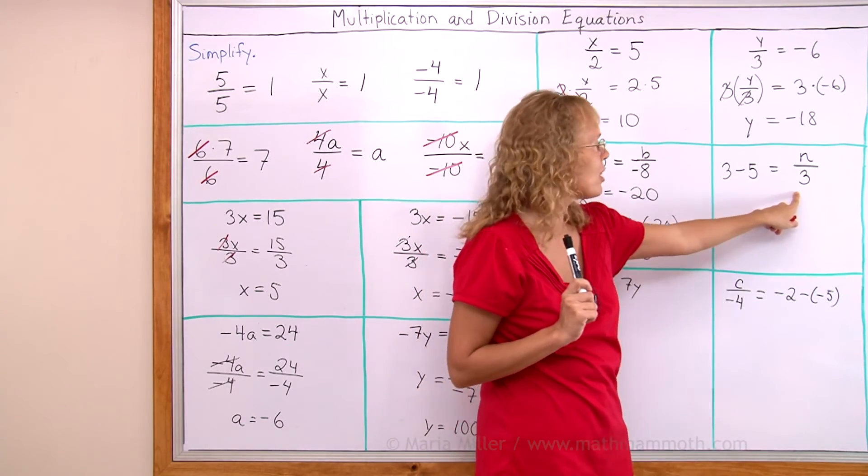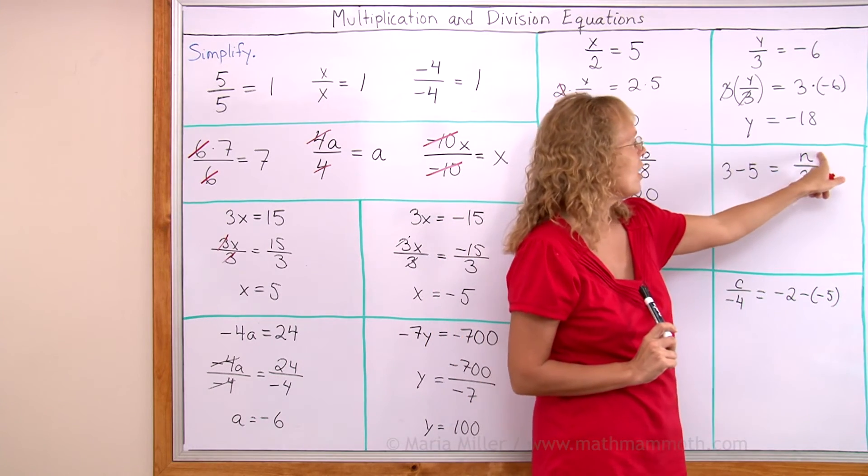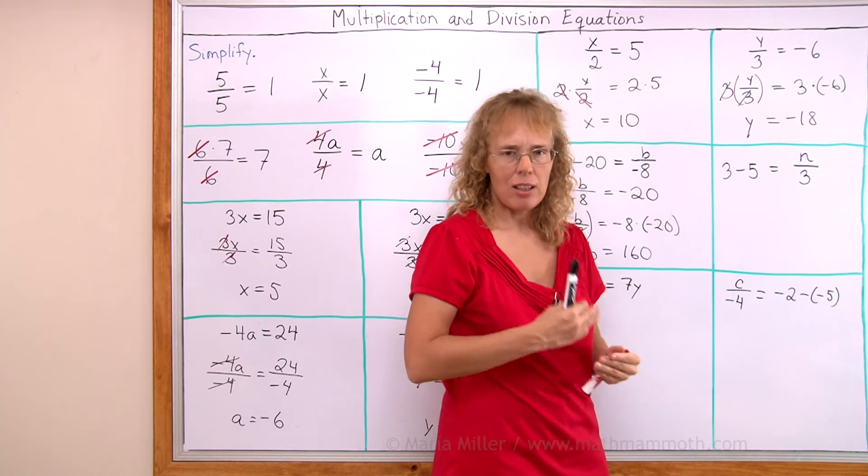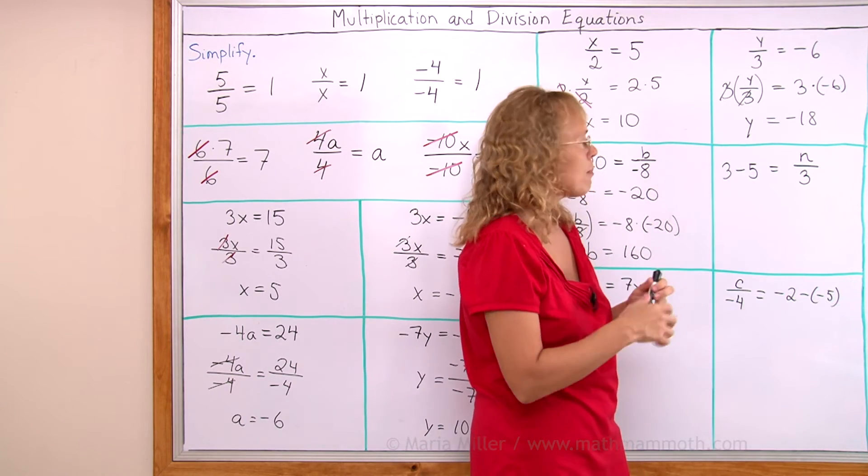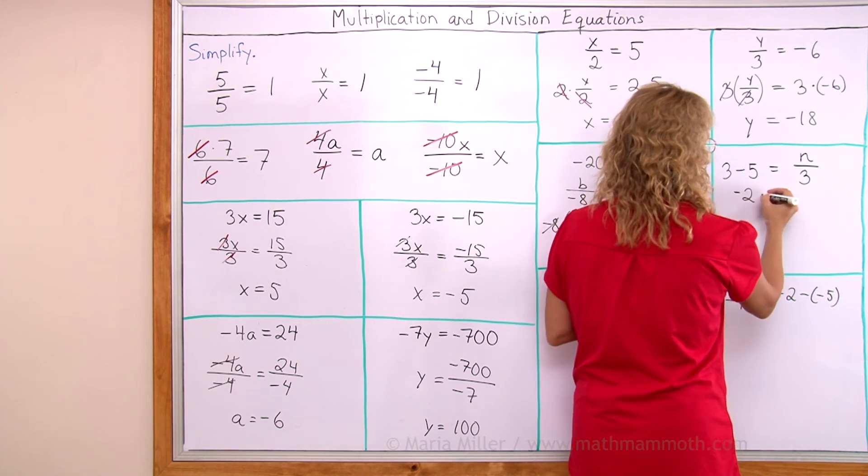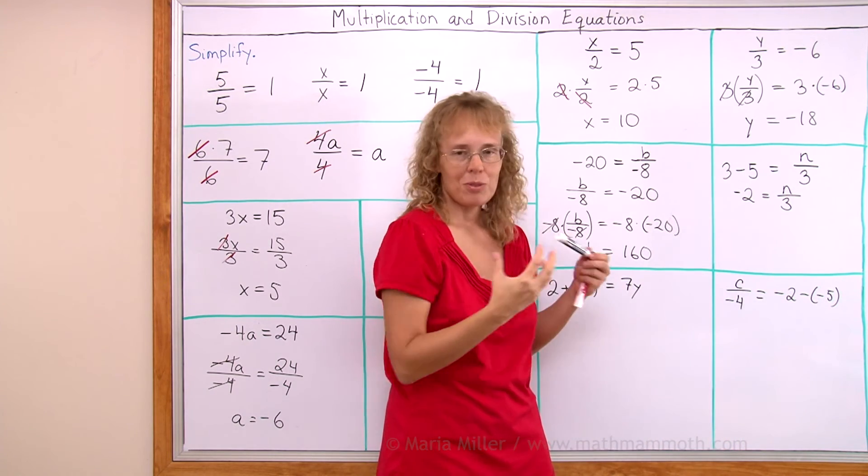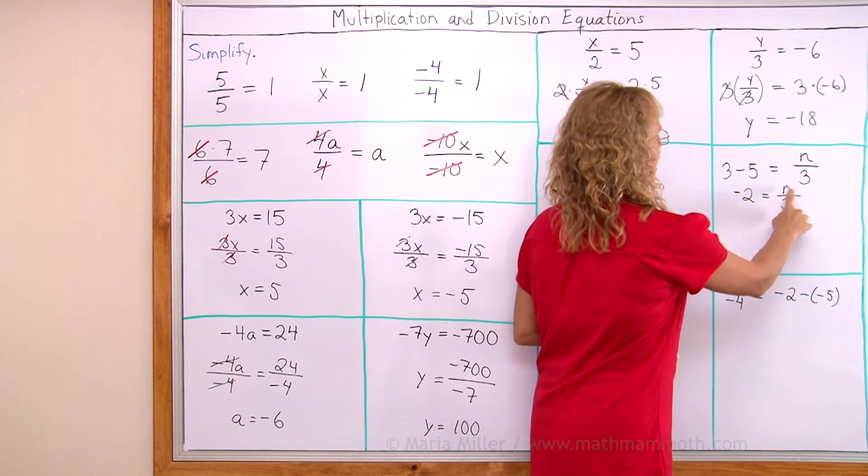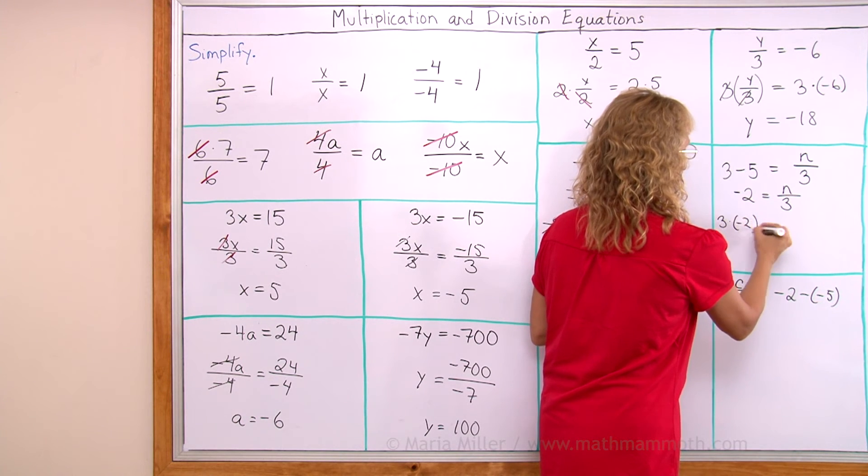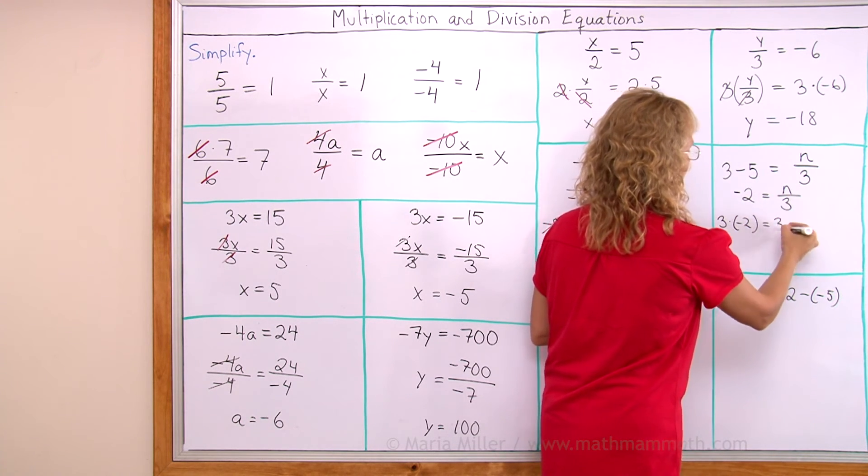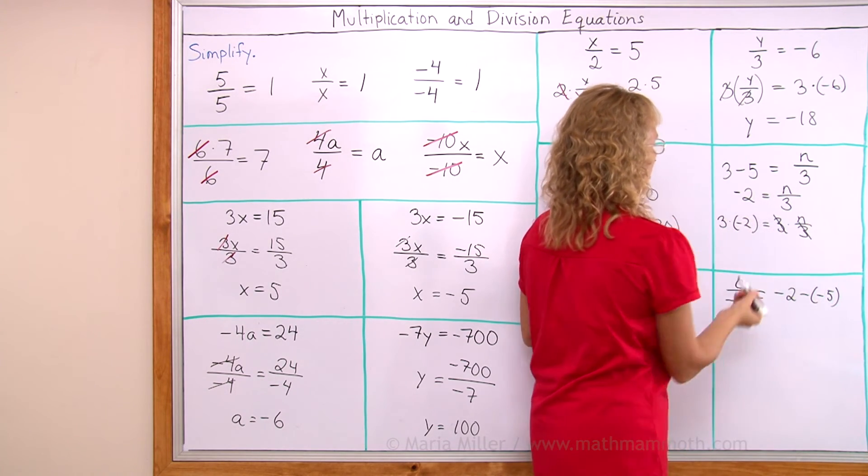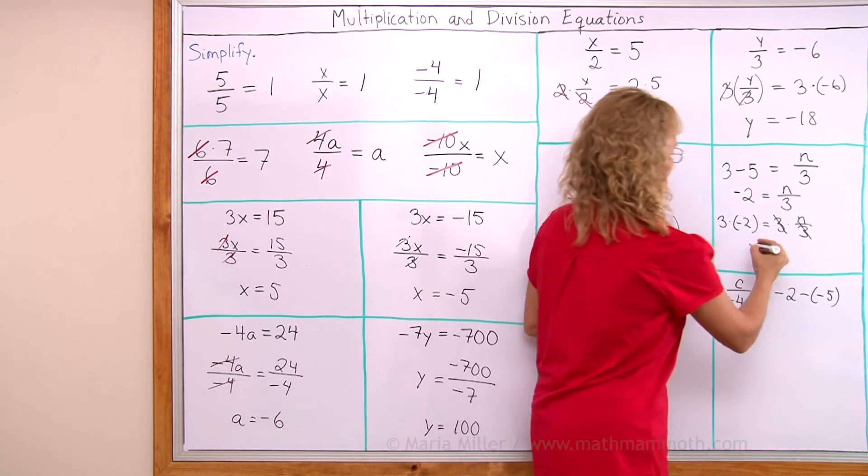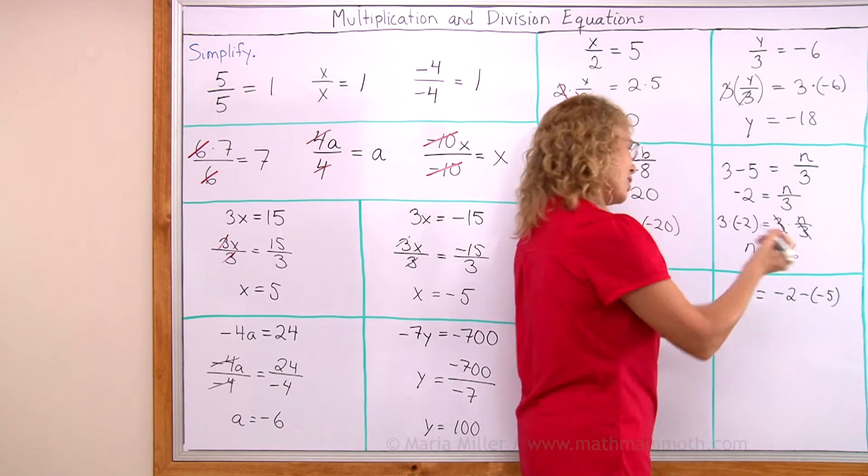Over here. This is the very same type of equation. It's a simple division equation because the variable appears only here and is divided by something. The only difference is here that we have on this side something we can calculate. We can simplify it. We can calculate 3 minus 5. It's negative 2. Now, if it looks confusing to you, then flip the sides. This time I'm not going to flip the sides. I'm going to multiply both sides by 3. So we get 3 times negative 2 equals 3 times that. Okay? And the 3's cancel here. And then we are left with this, which is negative 6 equals n. Now, I'm going to flip it because it's usual for us to write n equals instead of number equals n.